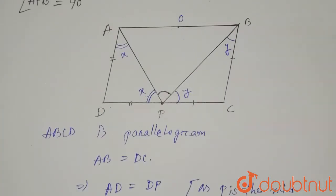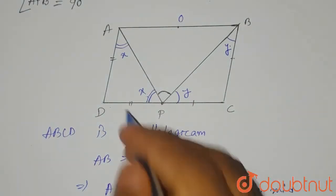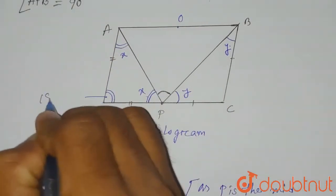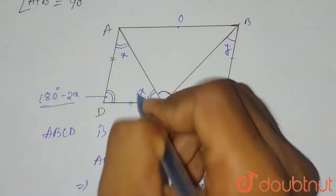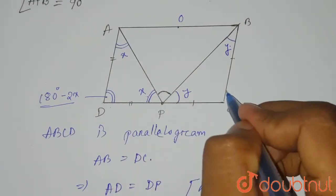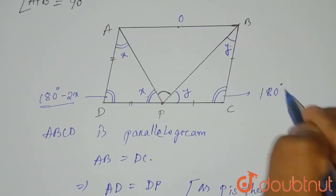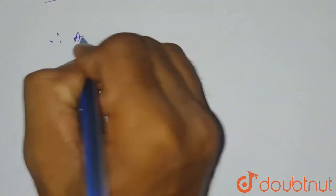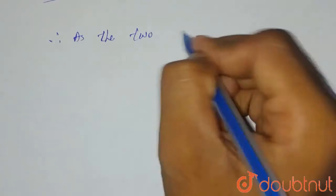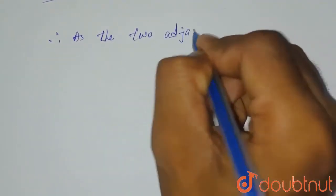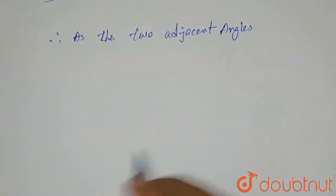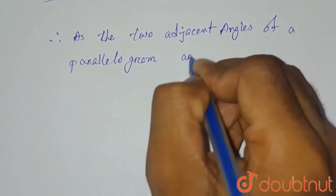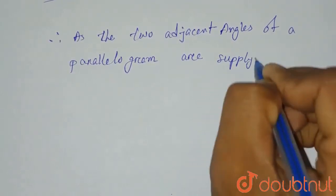So we have angle ADP equal to 180° minus 2x, and angle BCP equal to 180° minus 2y. Now, since two adjacent angles of a parallelogram are supplementary, angle ADP plus angle BCP equals 180°.